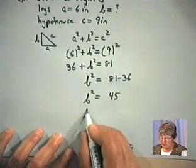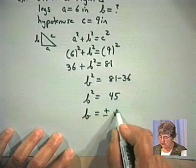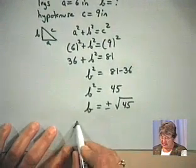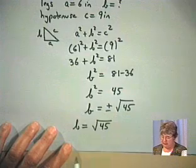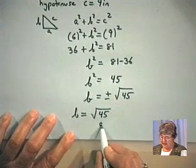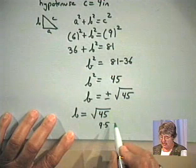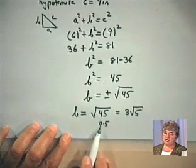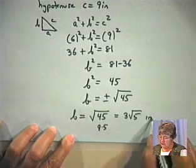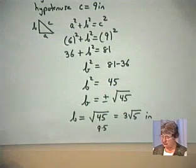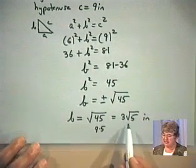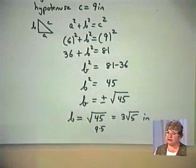Since we know about roots, and B is a dimension, B equals the square root of 45. If we simplify this radical, 45 is composed of 9 times 5, so we take the perfect square outside the radical. B equals 3 times the square root of 5 inches. To get an approximation, you can put that in your calculator.